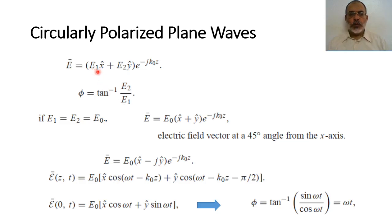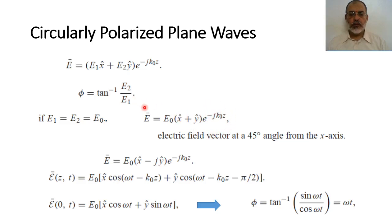If the amplitude of the X component and Y component are equal, such that E1 equals E2 equals E0, the angle phi would be 45 degrees. So the electric field would be E0 multiplied by the X direction plus Y direction, multiplied by e to the power minus jk₀z, which is the propagation function in the Z direction. The angle phi is 45 degrees because tan⁻¹(E2/E1) = tan⁻¹(1) = 45 degrees.